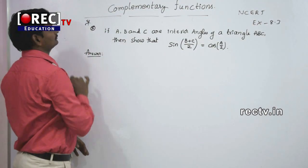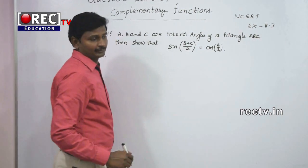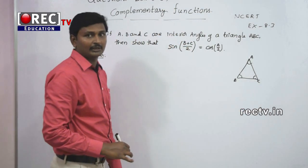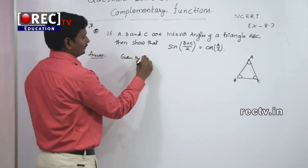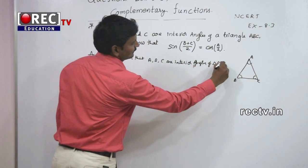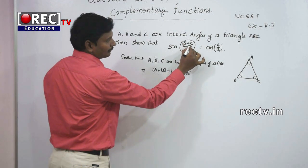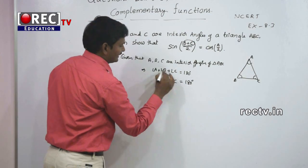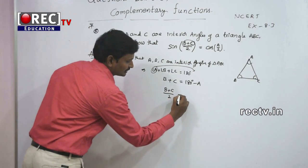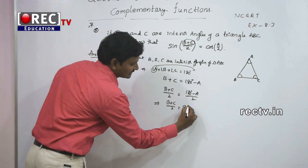Sixth question — an important one: if A, B, C are interior angles of triangle ABC, show that sin((B+C)/2) = cos(A/2). In any triangle, A + B + C = 180°, so B + C = 180° - A. Dividing both sides by 2: (B+C)/2 = 90° - A/2.